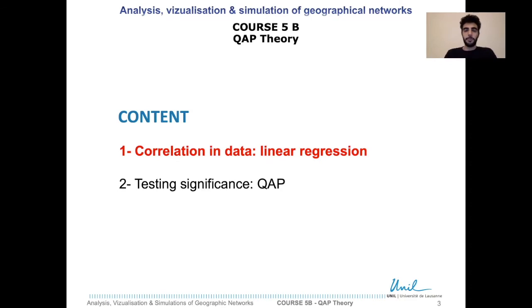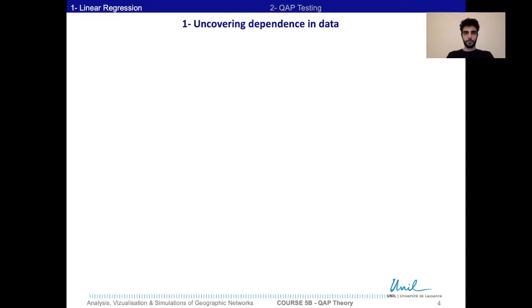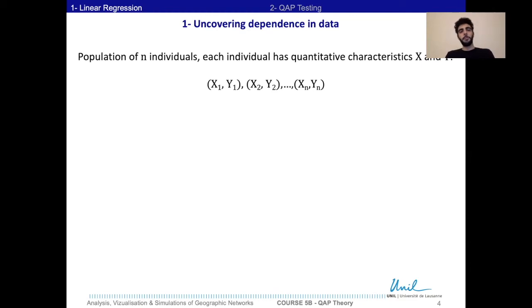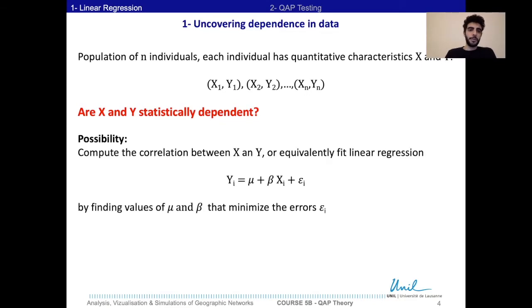We move to the first part. We start with a very simple setting. Let's say we have a population of n individuals, and each individual has quantitative characteristics X and Y. We would like to know if X and Y are statistically dependent.